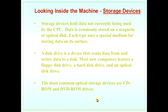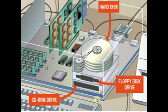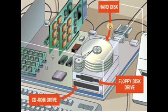Storage devices hold data not currently being used in the CPU. A disk drive is a device that reads and writes data to a disk. Most computers feature a hard drive. An optical disk drive such as a CD-ROM or DVD-ROM is also common. Floppy disk drives are a previous storage type. Now we use USB or flash drives and hard drives.